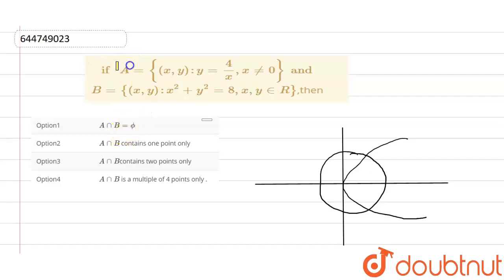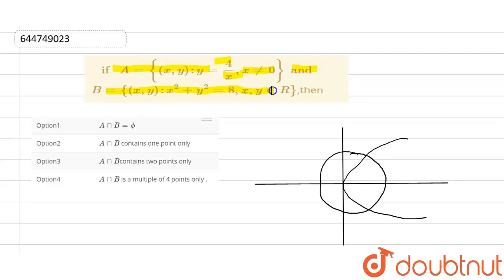The question given to us: if A is equal to {(x, y) : y = 4/x and x ≠ 0} and B is given as {(x, y) : x² + y² = 8, and x, y belong to R}, then we have to find what is the correct answer.